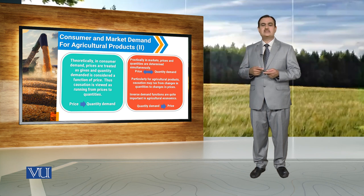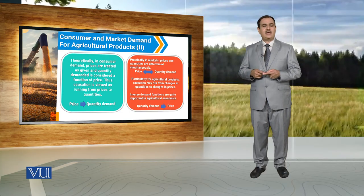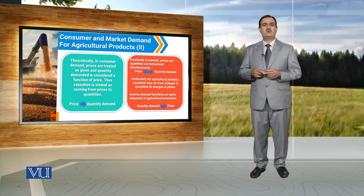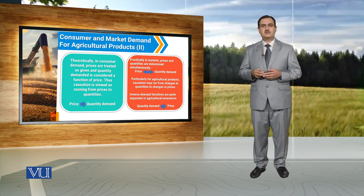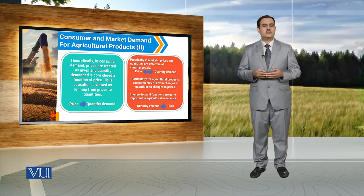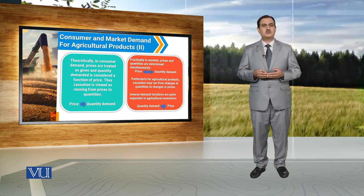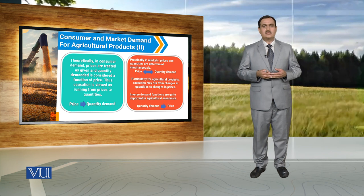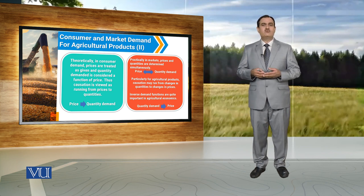It is not only price that affects quantity demanded — quantity demanded also affects price. When we say quantity demanded affects price, we are studying the inverse demand function. Under the ordinary demand function, we study the association where quantity demanded is a function of price. But under the inverse demand function, we analyze the association where price is a function of quantity demanded.